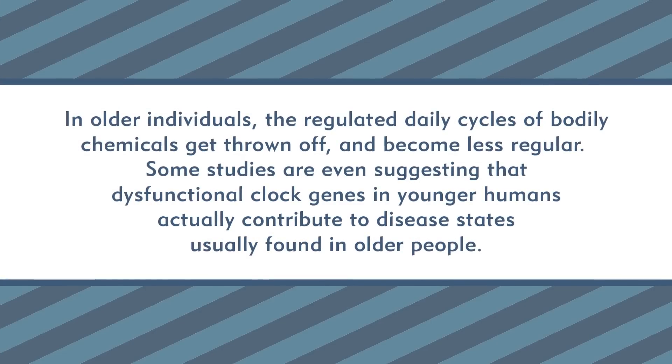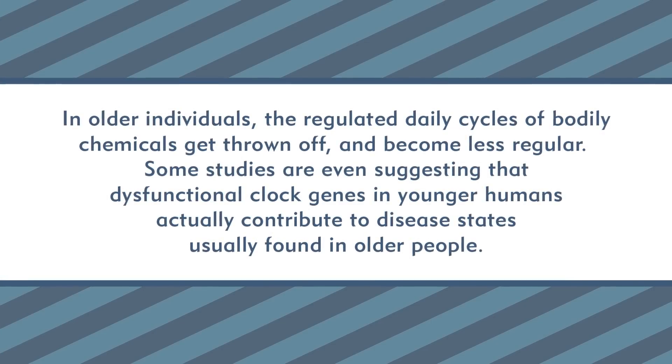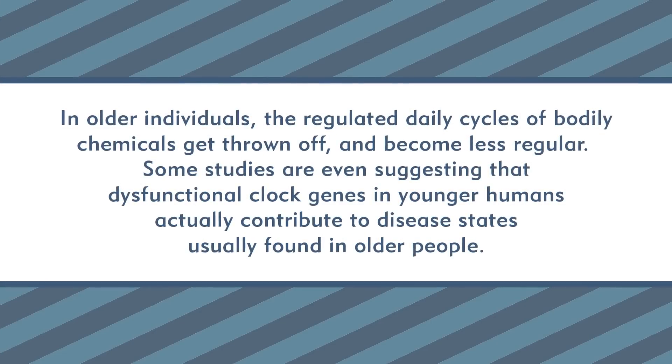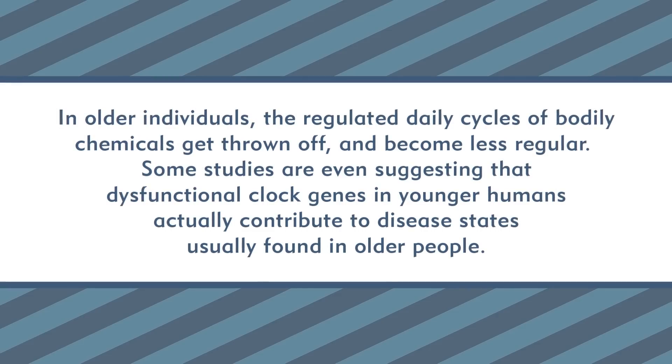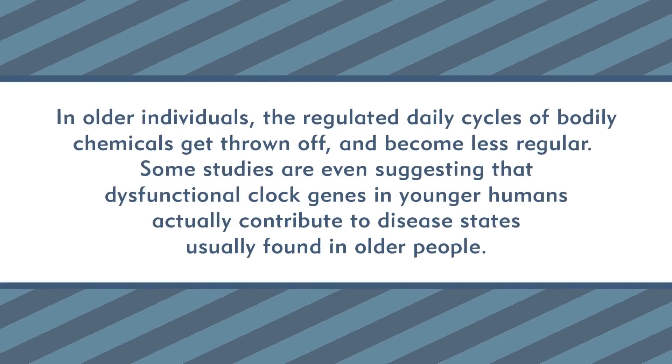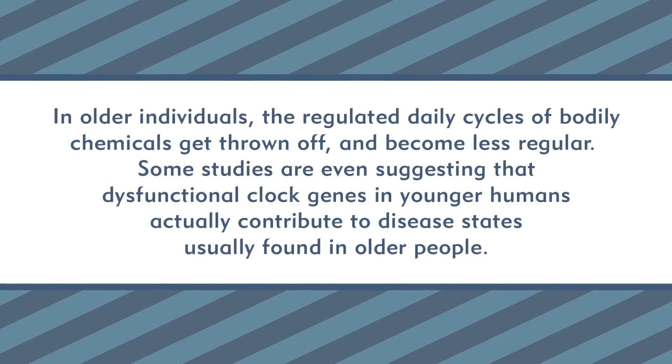Keep in mind that metabolism can be affected by several things throughout an organism's lifespan, so even if a strong correlation between these variables hasn't quite been validated, there are some other potential players in the aging game. Recent research into the genes that affect our biological clocks have come up with some fascinating results. In older individuals, the regulated daily cycles of bodily chemicals get thrown off and become less regular. Some studies are even suggesting that dysfunctional clock genes in younger humans actually contribute to disease states often found in older people.